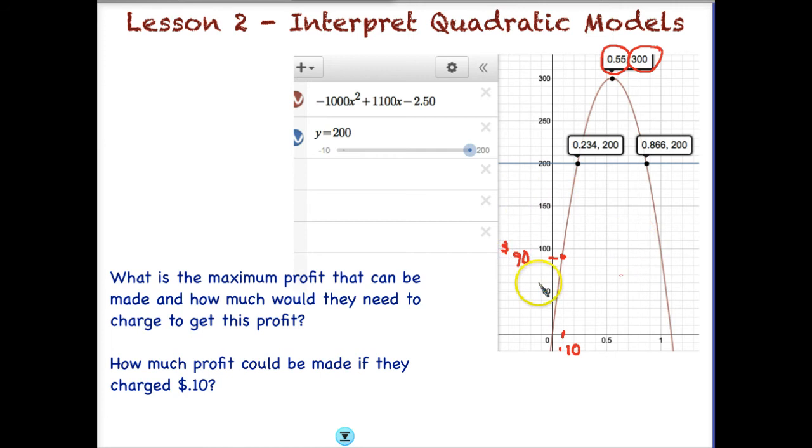And again, when we have our graphs, and when you submit your graphs, make sure that you have labels. So down here is the price that we would charge, and up here is the profit we would make. Always make sure to have labels with your graphs, and a graph title is also very nice. And that concludes our lesson today on interpreting quadratic models. You will find a assignment on the next page in which you will interpret some quadratic models as well.